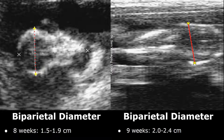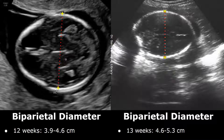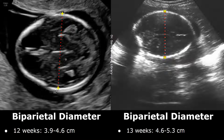At 8 weeks, the biparietal diameter or BPD value will be between 1.5 to 1.9 cm. At 9 weeks, it will be between 2 and 2.4 cm. By 12 weeks, the BPD value can be between 3.9 to 4.6 cm. And at 13 weeks, it can be between 4.6 to 5.3 cm.